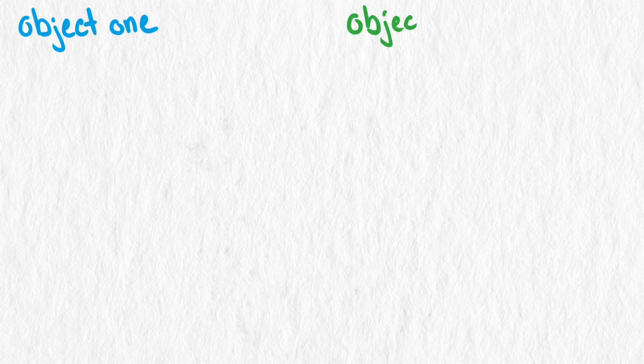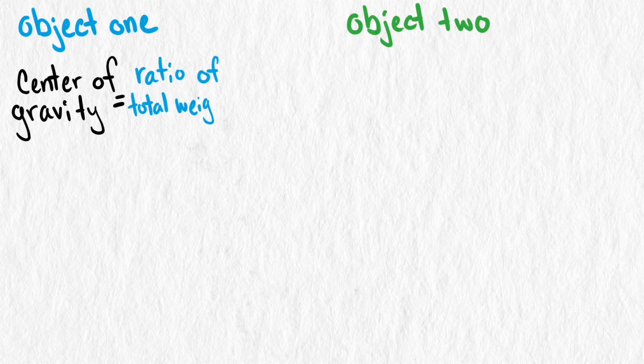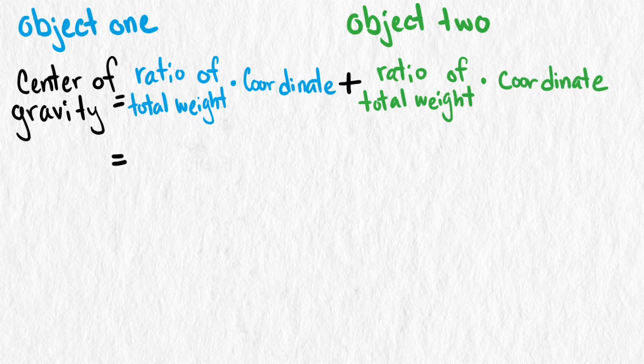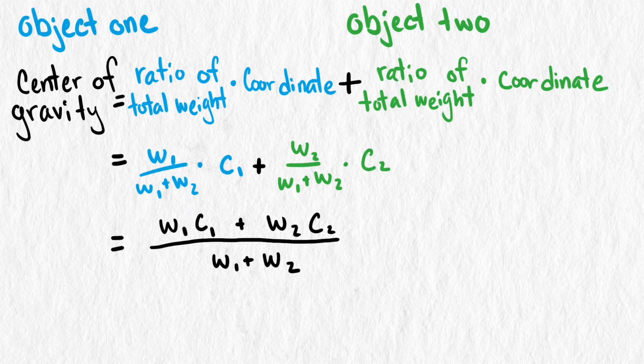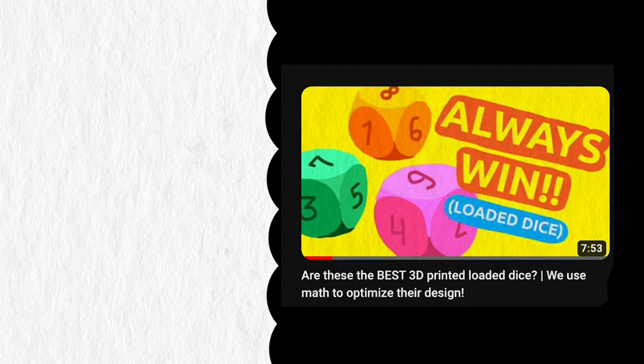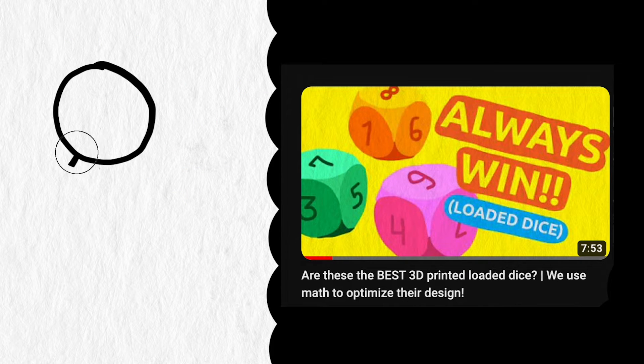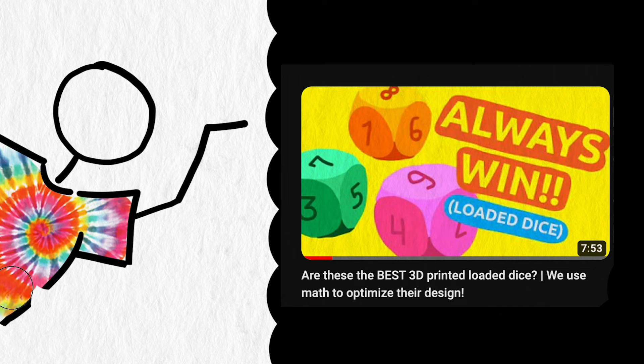We use weighted averages to find the center of gravity of two or more objects. We multiply the ratio of the total weights of an object times its coordinate, then add them together. It can be written in either of these two ways. Our video about 3D printing loaded dice goes into a more detailed explanation of this formula. You'll find a link to that video in the description.